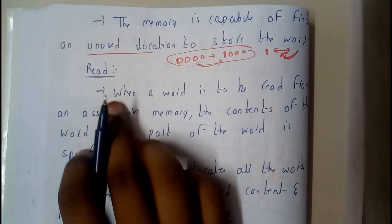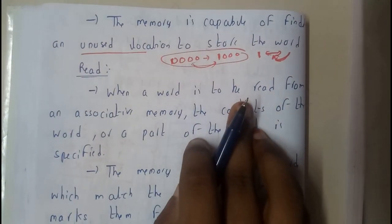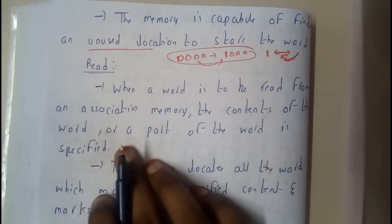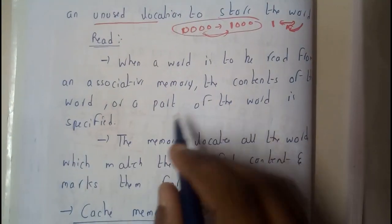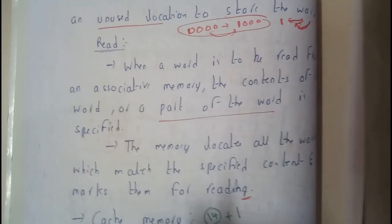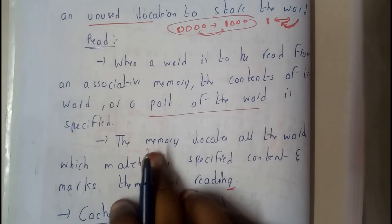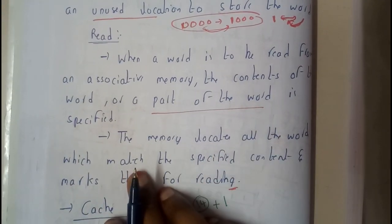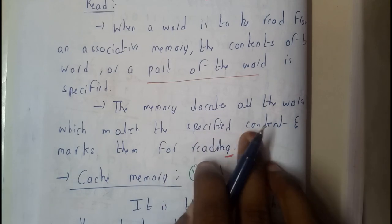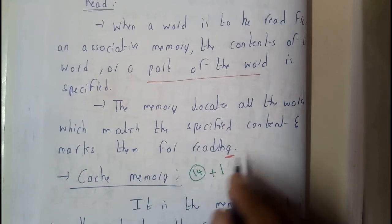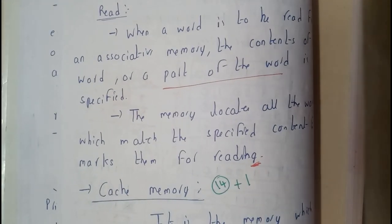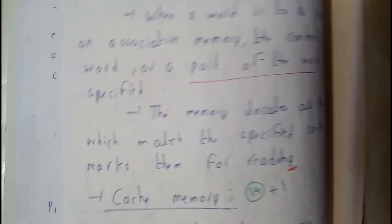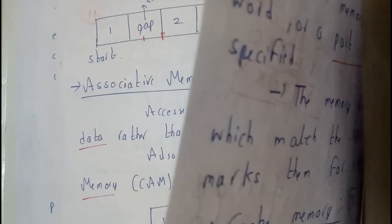Now let us go through the read operation. When a word is to be read from associative memory, the content of the word or a part of a word is specified and matched. All the words which match the specified content are identified by reading one after the other using the mark register.